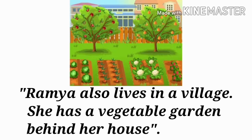Next we will see about Ramya. Ramya also lives in a village. She has a vegetable garden behind her house. Chinu says he likes potato, lady's finger, carrot, and drumstick. Now you tell me — what vegetables do you like?